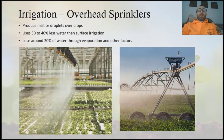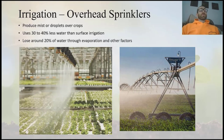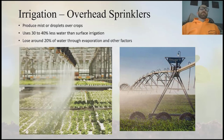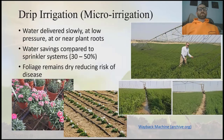We also have overhead sprinklers, which can be done in a greenhouse or in a field with a central pivot system. These produce a mist or droplets over the crop and are a little more water efficient than surface irrigation — using about 30 to 40% less water than surface irrigation. But it's still subject to water evaporation and other factors, and you end up losing about 20% of your water.